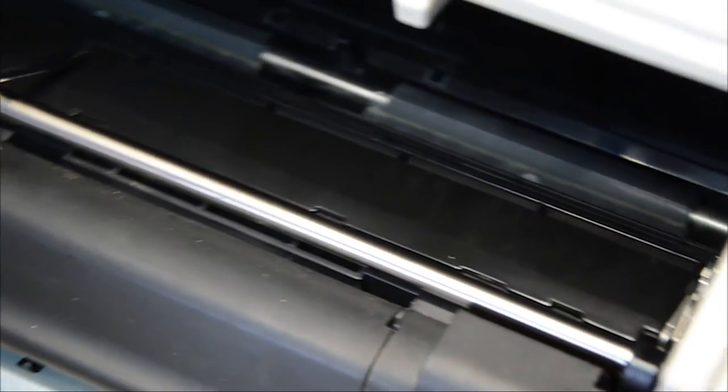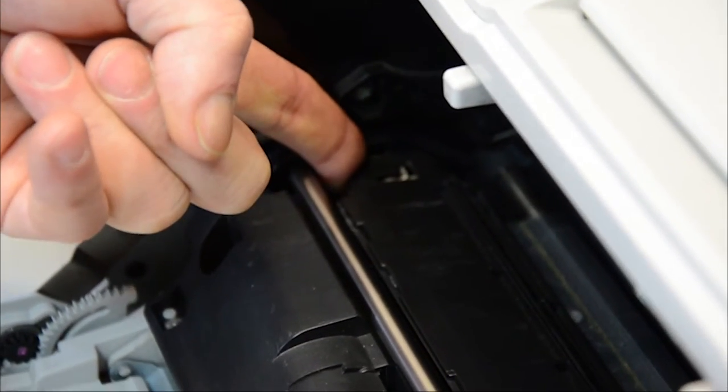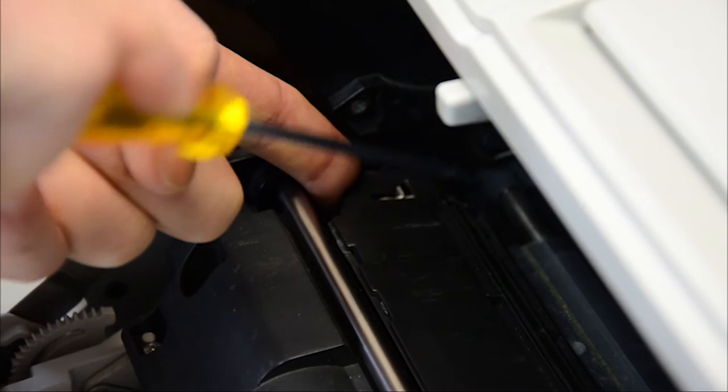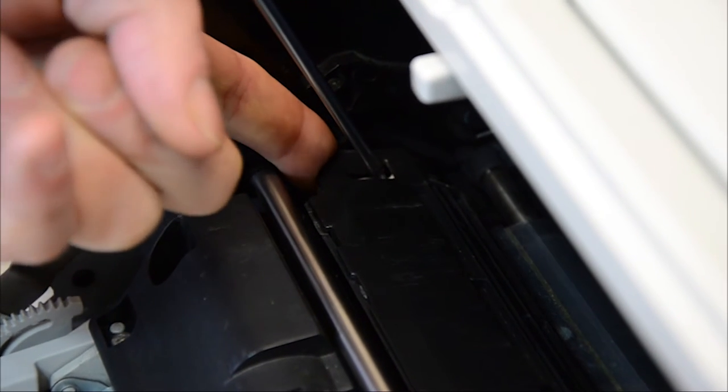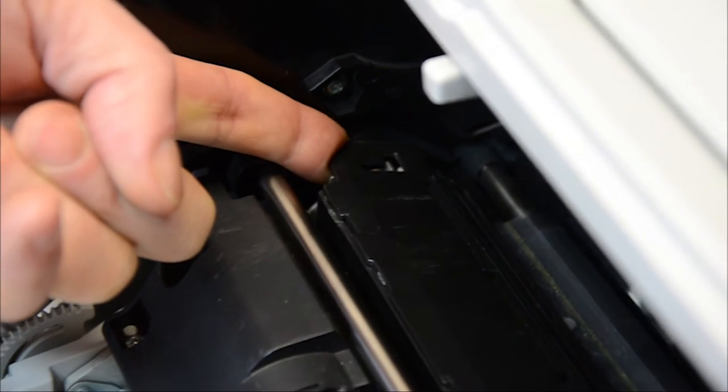To take it out, first of all, we put the index finger of our left hand into the cutout area. Using the flathead screwdriver, press down the metal clip. Lift slightly with your index finger and hold it in place.